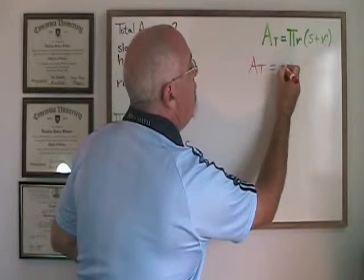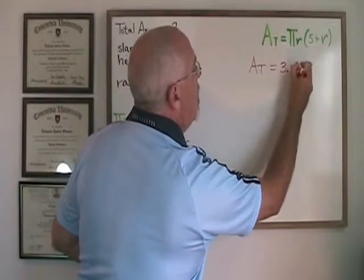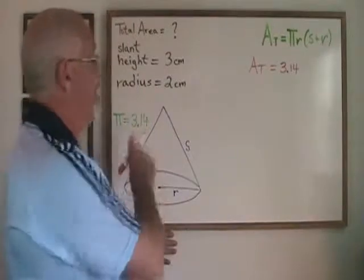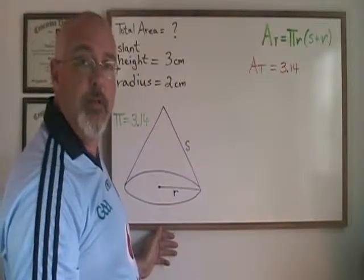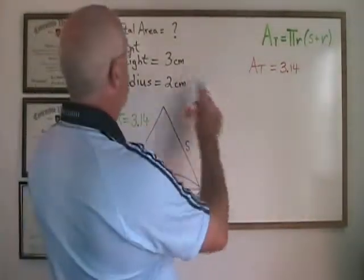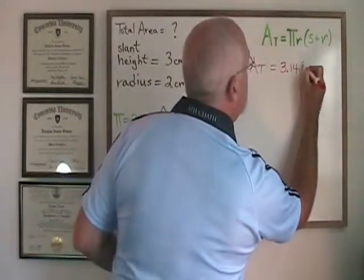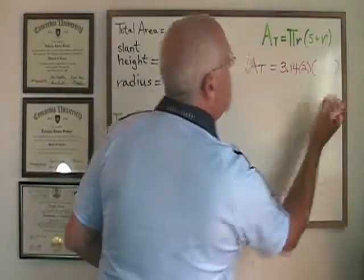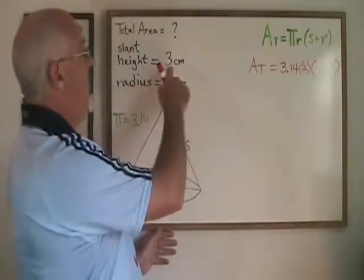Total area equals pi, and we use 3.14 for these examples as our approximation for pi, times r which is 2 times s plus r which will be 3 plus 2.